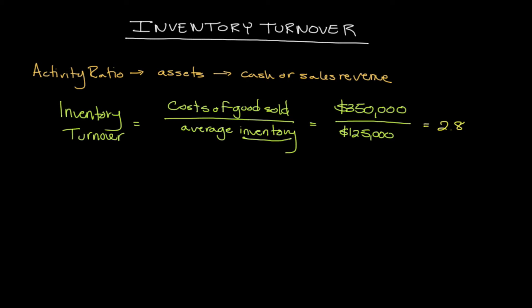Unlike other ratios that yield a percentage, inventory turnover is a multiple. A result of 2.8 means that in the given accounting period — say, a year — we sold through our inventory 2.8 times. To assess whether this is strong, you want to compare it to past periods and to other firms in the industry, while being cautious of two key signals.